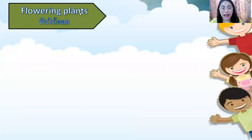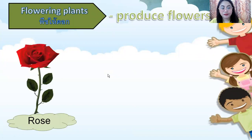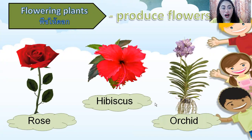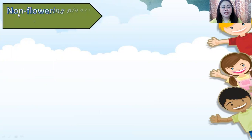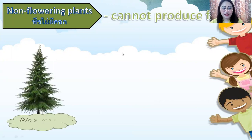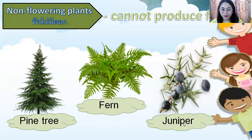Flowering plants produce flowers. Rose, hibiscus, and orchid are flowering plants that produce flowers. Non-flowering plants cannot produce flowers. Pine tree, fern, and juniper are non-flowering plants that cannot produce flowers.